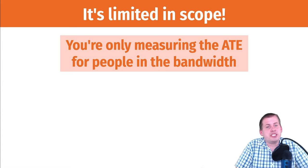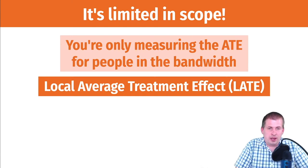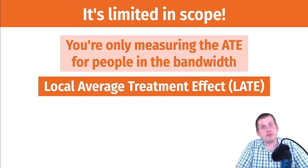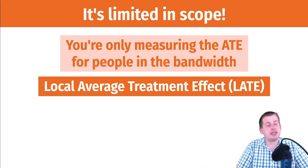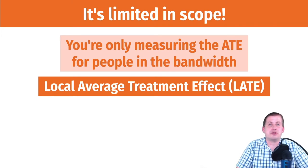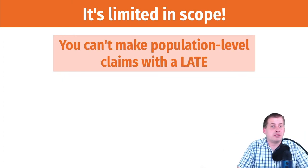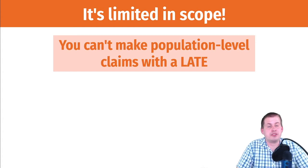Also, the gap that you're measuring is limited to just the people in the bandwidth. We mentioned this before in the very first section of the lecture — this local average treatment effect. What you're calculating is not the global population level average treatment effect. You're not saying that participating in this tutoring program boosts test scores for everybody by 11 points. What you're saying is people who score around 70 on the entrance exam will have their final test scores boosted by 11 points on average. That's the causal effect for just that bandwidth. So that is why it is a local average treatment effect.